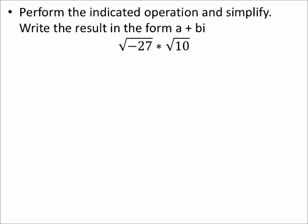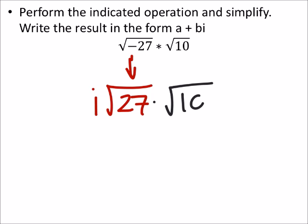So, from this negative 27, the square root of that, I'm just going to take i times the square root of 27. And then I'm going to multiply it by the square root of 10.